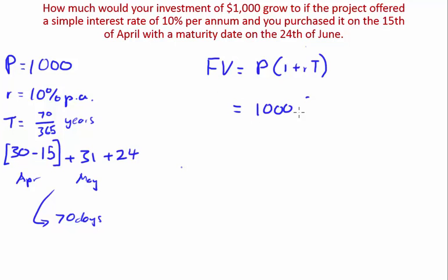1000 bracket 1 plus your rate which is 10% multiplied by 70 on 365. Once you put this into your calculator so 1000 times bracket or this close bracket you would get $1,019.18. That's your first example.